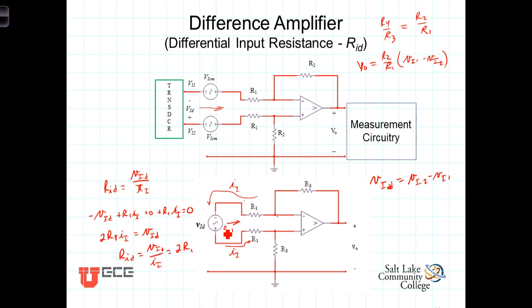So the resistance that the transducer sees looking into this difference amplifier is equal to 2 times this resistance value there.